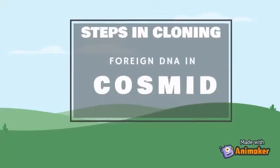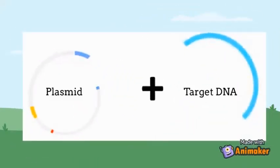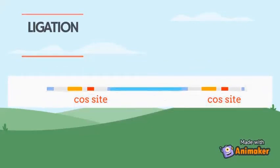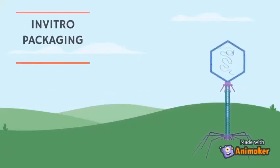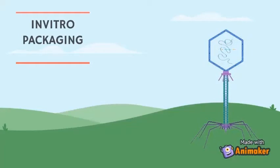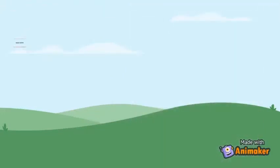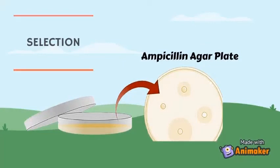Now let us move into the steps in cloning of foreign DNA in a cosmid vector. Firstly, the genomic DNA to be cloned and the cosmid cloning site will be cut with the same restriction enzymes. Then ligation of foreign DNA between two cosmid sites will be performed, making a concatemeric DNA. The next step is in vitro packaging to introduce the DNA into phage heads to form the matured phage particle. Next, the cloned DNA is introduced into E. coli by transduction. The last step is selection of transformed cells, which can be identified by plating on a medium containing an antibiotic such as ampicillin agar plate. Those cells which did not take up the cosmid would be unable to grow.